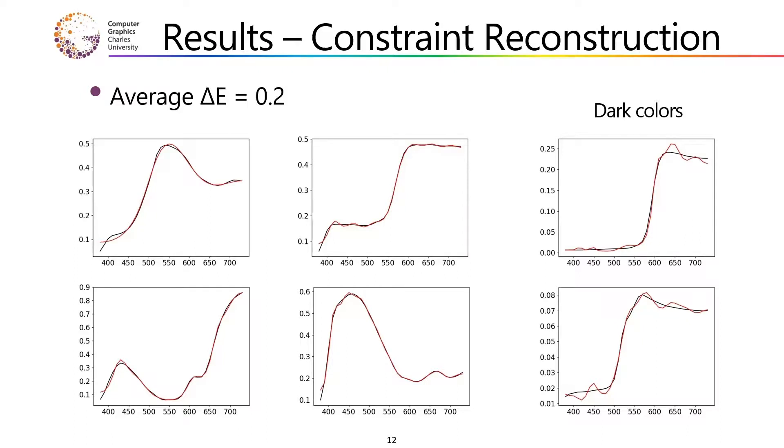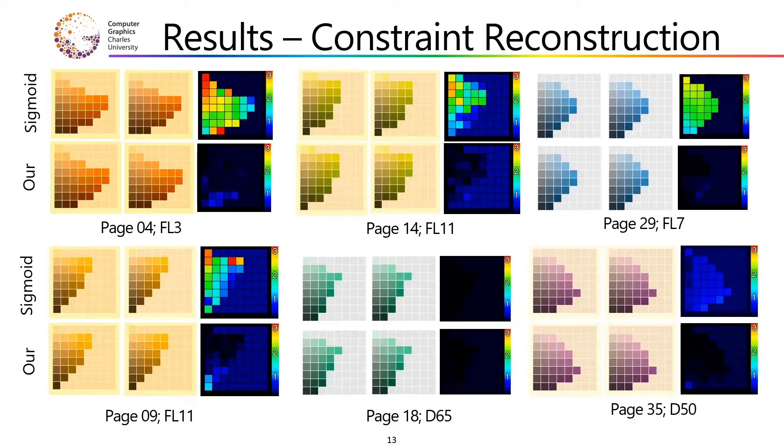Additionally, in the future, we are confident this could be eliminated by case-specific handling. To support our claim, we tested our constraint uplifting model on the pages of the Munsell Book of Color, and we compared our results with the sigmoid-based uplift by Jakob and Hanika.